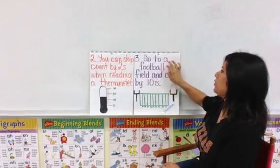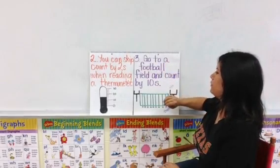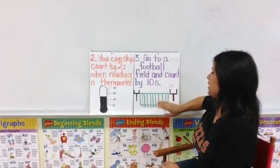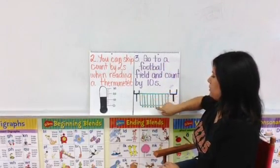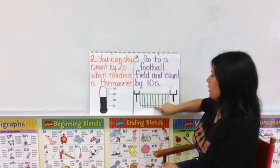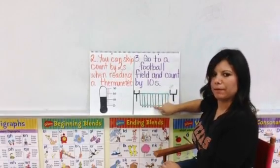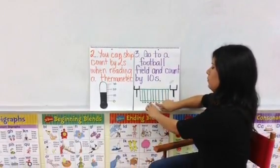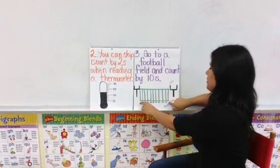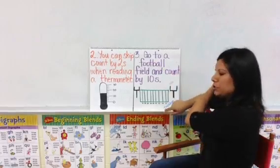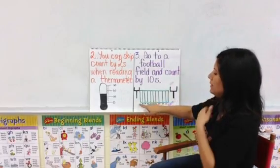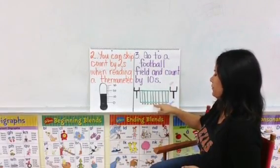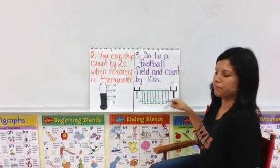Number three, you can go to a football field and count by tens. On a football field, the fifty mark is actually in the middle of the field, and then it spreads out forty, thirty, twenty, ten, and then zero. But you can also count it as zero, ten, twenty, thirty, forty, fifty, all the way to one hundred.